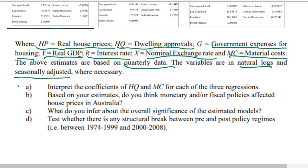Now we'll interpret the coefficients of HQ and MC — that means dwelling approvals and material cost — for each of the three regressions. After that, as an econometrician you have to look for the monetary and fiscal policy impact.